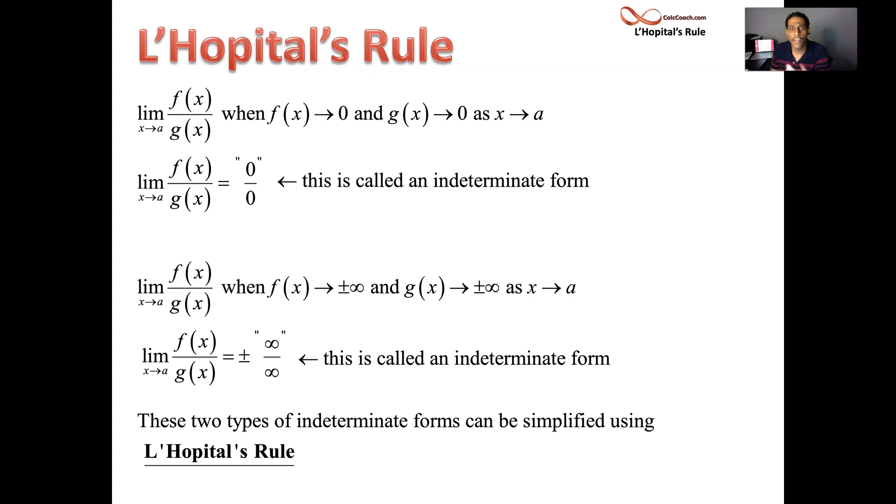And here's what it says. The limit that you're trying to find, if you can trade in that limit for another limit, provided that this new limit exists. The new limit that you trade it in for is the derivative of the numerator divided by the derivative of the denominator.